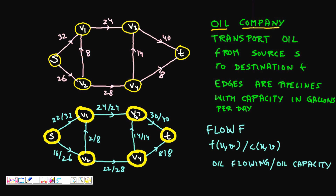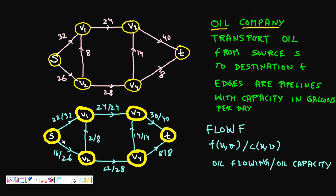After working on it, you come up with a solution: put 22 gallons per day in the pipeline from s to v1, 24 gallons per day from v1 to v3, and 16 gallons per day from s to v2. The oil is now flowing — your pipeline can carry 32 gallons but you are pushing 22, so 22 out of 32 gallons are flowing through that edge.